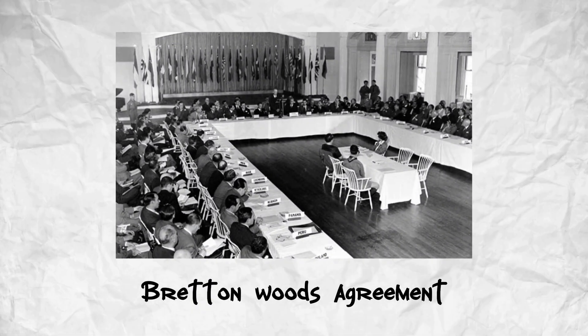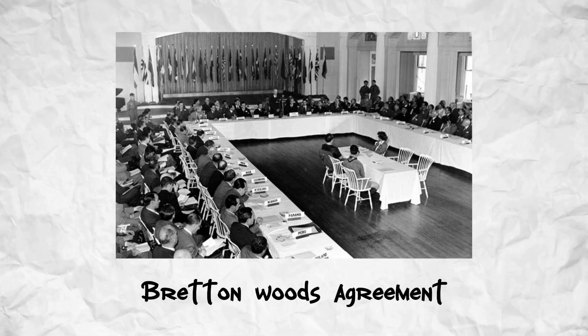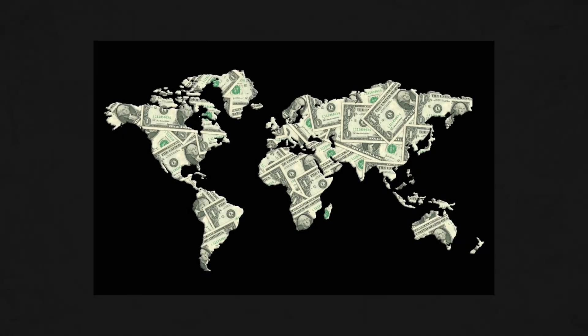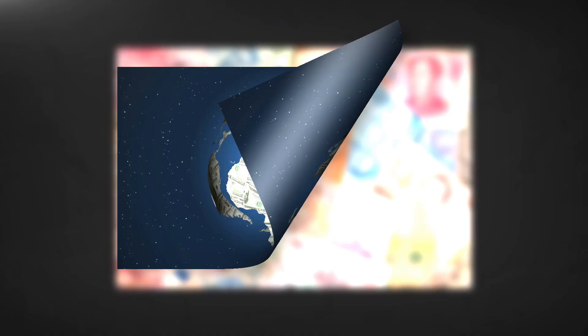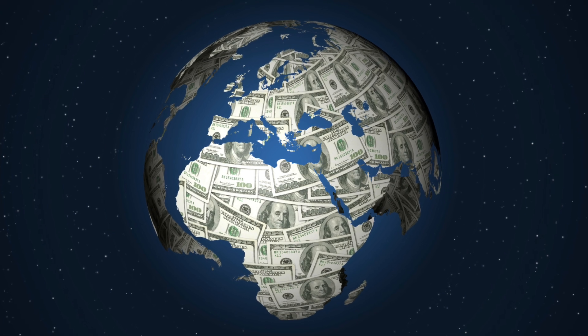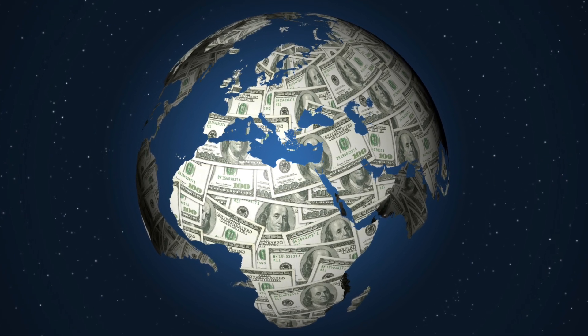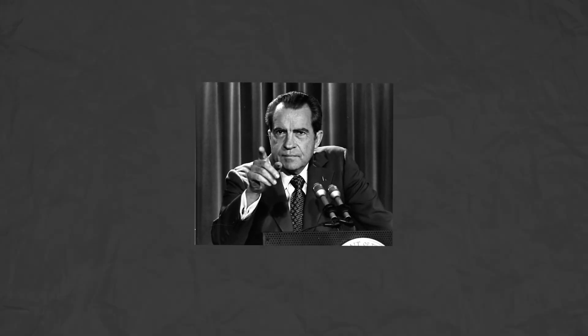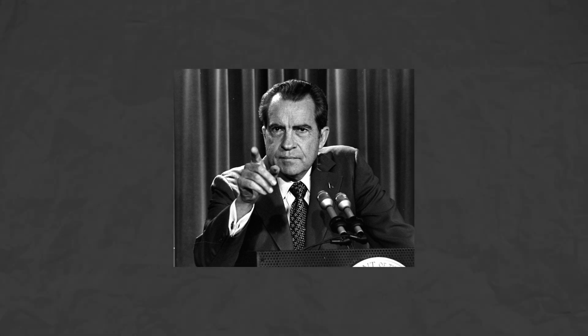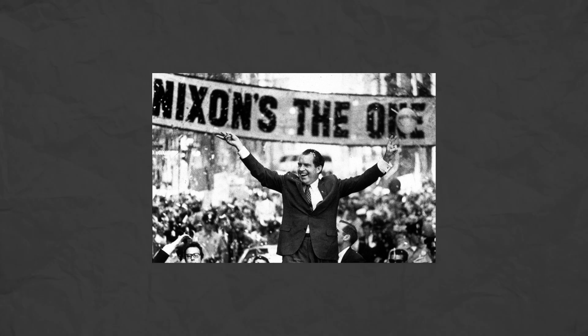In 1944, during World War II, the Bretton Woods Agreement established a new international monetary system. This system pegged major currencies to the U.S. dollar, which was, in turn, convertible to gold. This arrangement aimed to combine the stability of the gold standard with the flexibility needed for economic growth. However, by 1971, the United States faced significant economic challenges and could no longer maintain the gold convertibility of the dollar. President Richard Nixon announced the suspension of gold convertibility, effectively ending the Bretton Woods system and the gold standard era.